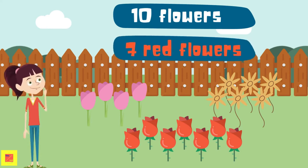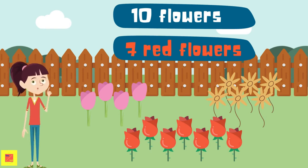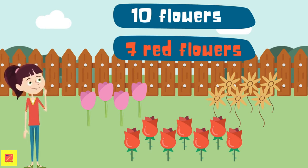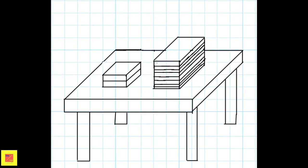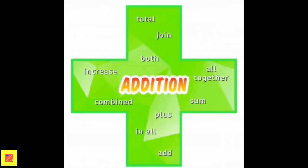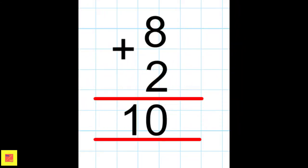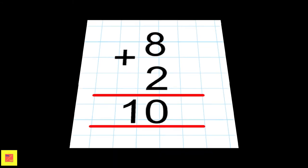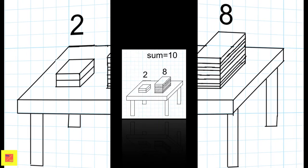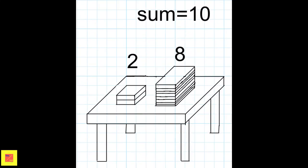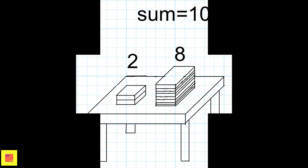But what happens if she plants seven more red flowers? Let's add the seven new red flowers to the ten flowers, which gives us a total of 17 flowers. There are eight long books and two short books on the table. How many books are there in all? Let's add to find the total number of books: eight plus two is equal to ten.